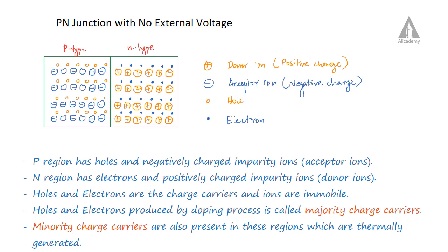As soon as we join a p-region and an n-region, in the p-region, the charge carriers are holes. In the n-region, the charge carriers are electrons. In the n-region, the donor ions are positively charged.